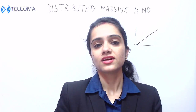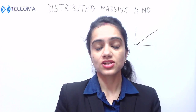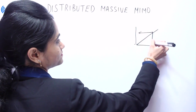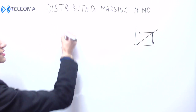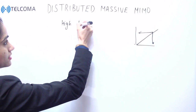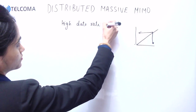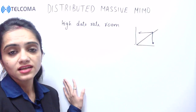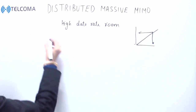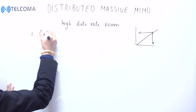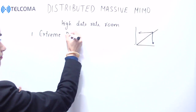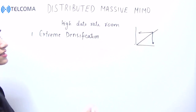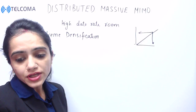There are three symbiotic techniques that can support the data rate boom, so we have to apply technologies that can work with high data rates. The very first technique is extreme densification and offloading.